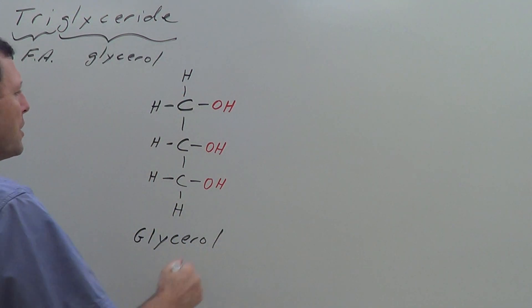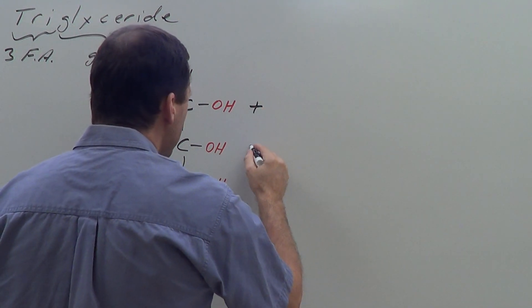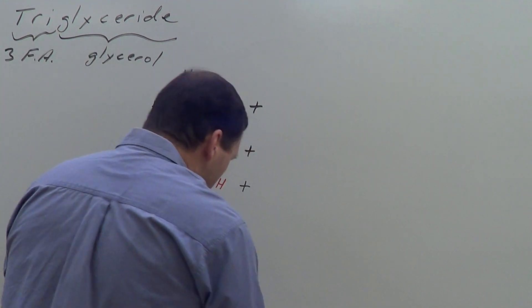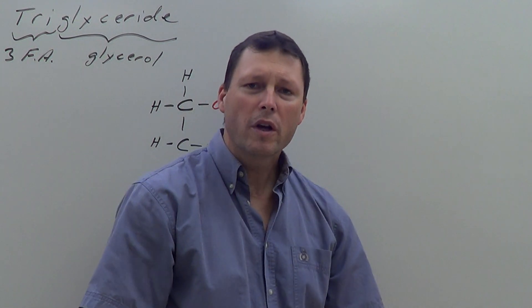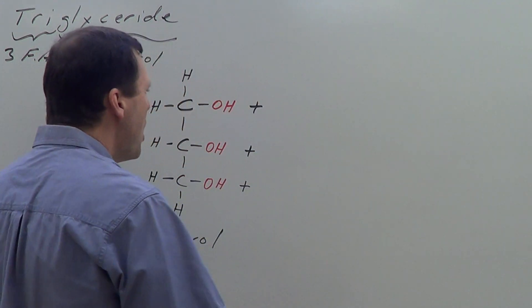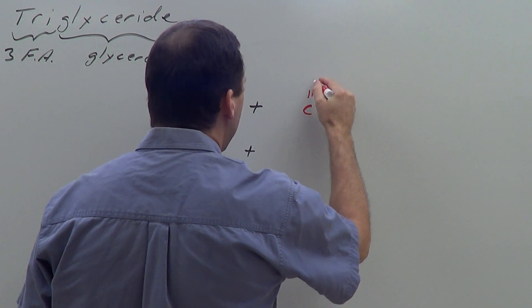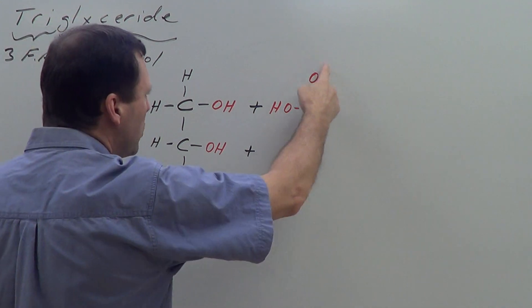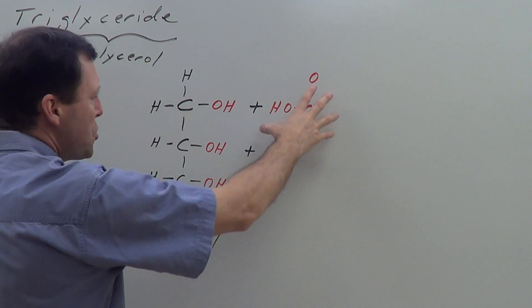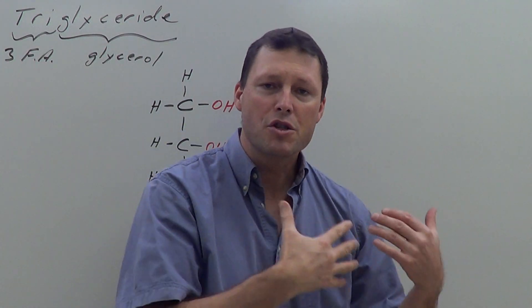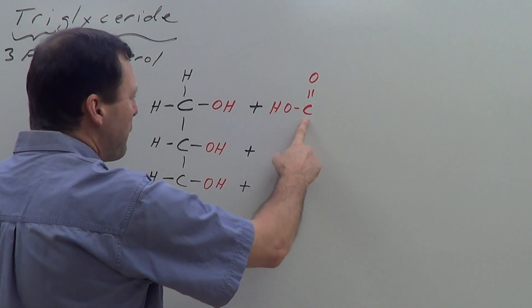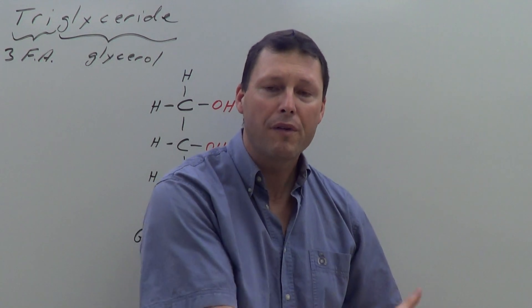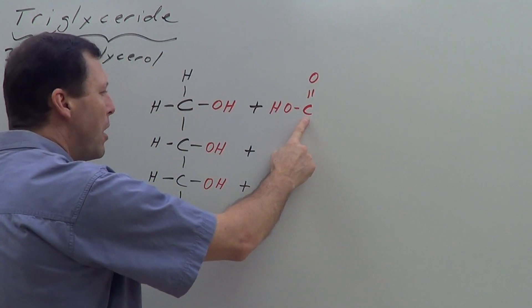We're going to connect three fatty acids to the glycerol — that's what the 'tri' stands for. When we draw a fatty acid, we start by drawing the carboxyl group: C double bond O, with an OH. That's a very polar functional group that serves as the site of a chemical reaction. That first carbon is part of the carboxyl group, and the carbons in fatty acids are numbered starting from there.